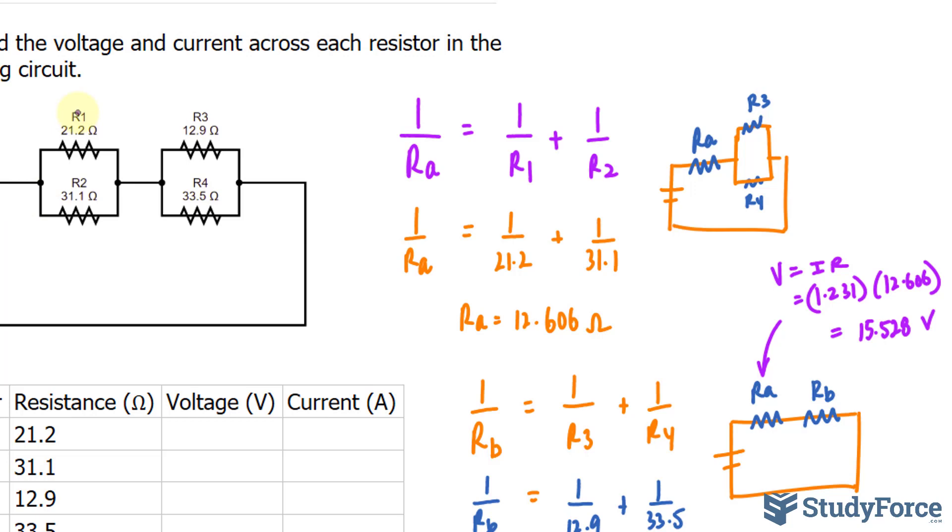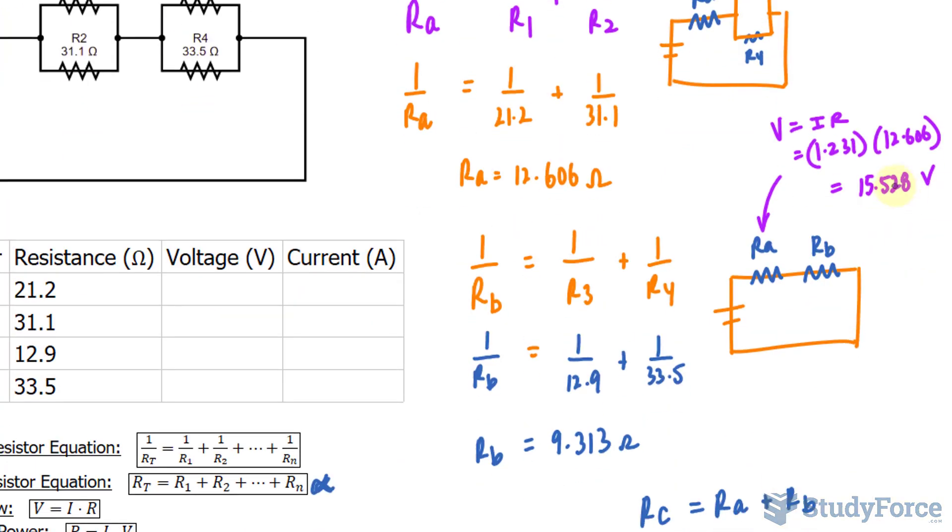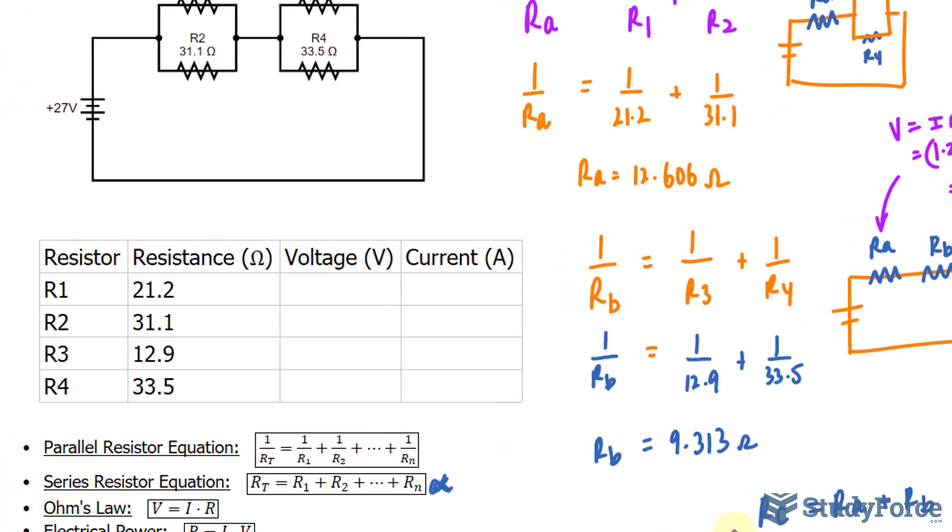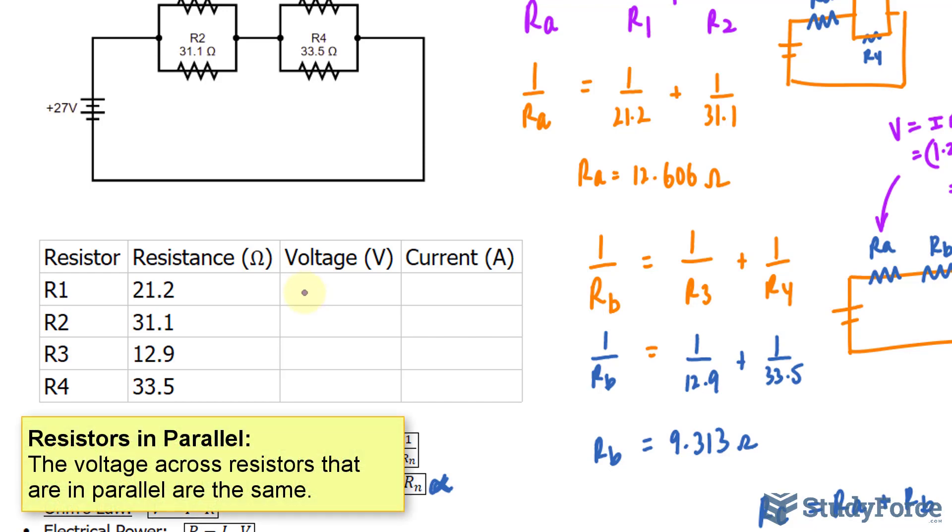And because they are parallel, that means the voltage of R1 and R2 will be 15.528. Let me go ahead and write that down. And this time I will round to the nearest tenth or one digit after the decimal place. I have 15.5 for R1 and the same for R2.